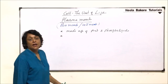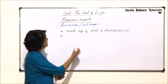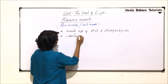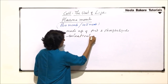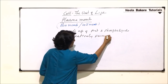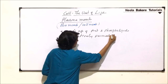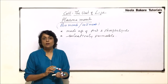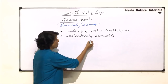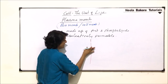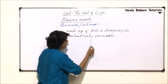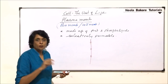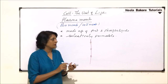Plasma membrane is a selectively permeable membrane. What is meant by this term selectively permeable? Our plasma membrane is a porous membrane — that means there are pores in our plasma membrane and the pore size is also fixed.